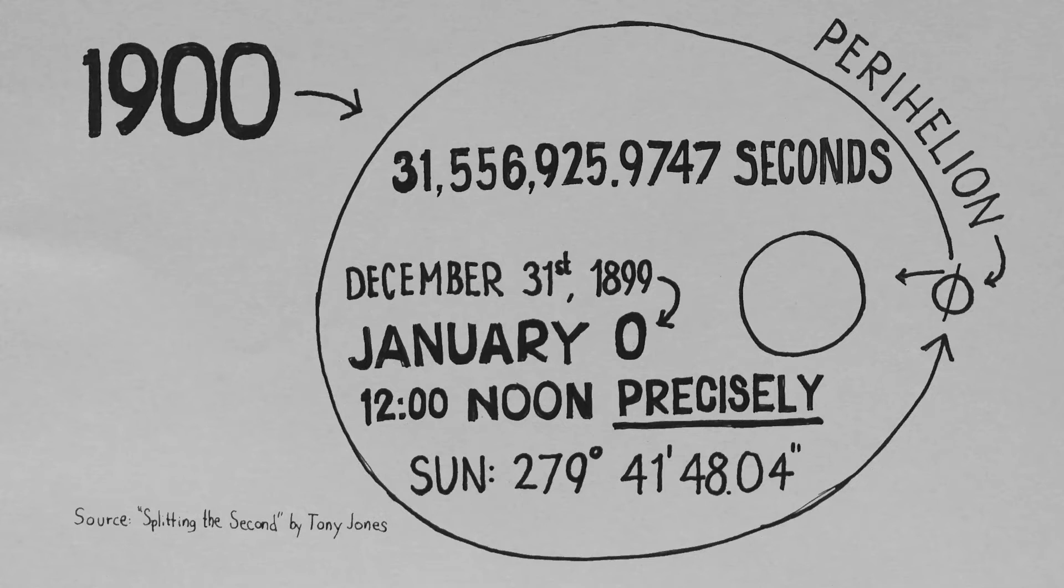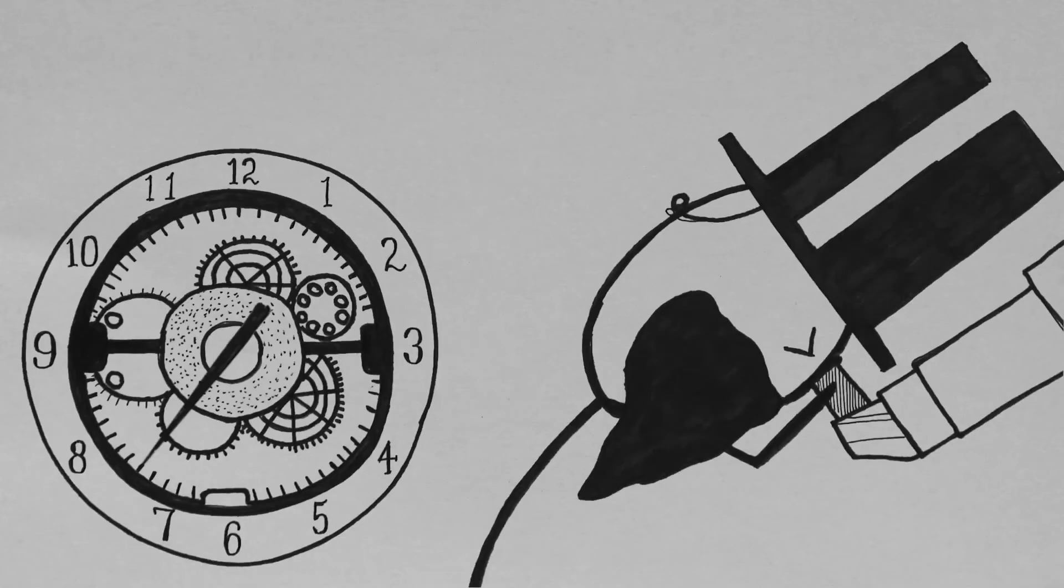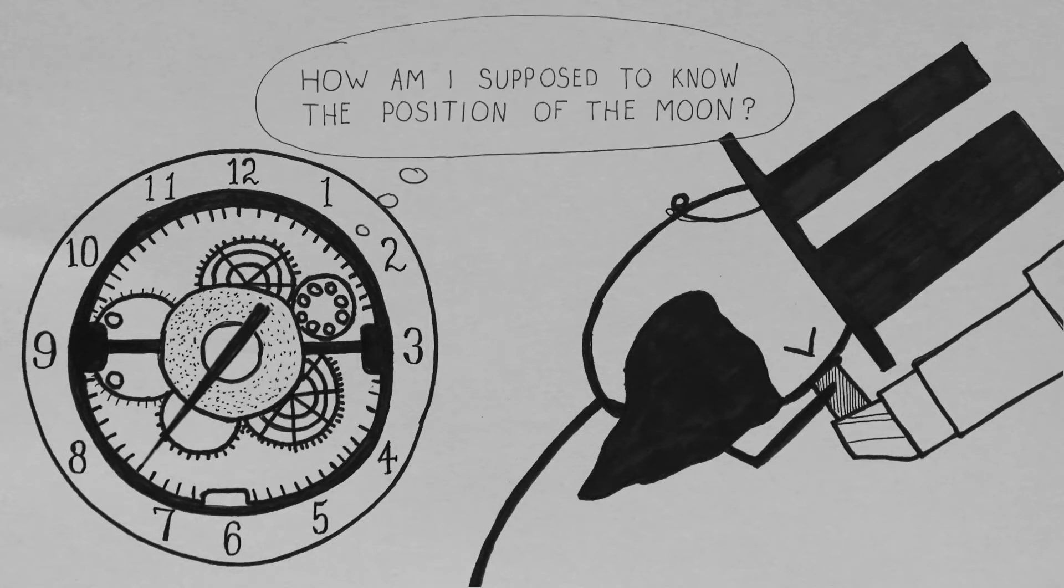The other, perhaps more obvious, problem was that, if time was now defined from almanacs, however accurate, how do you plan to run a clock against a body in outer space?